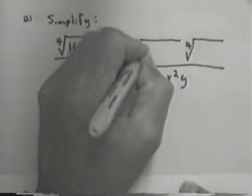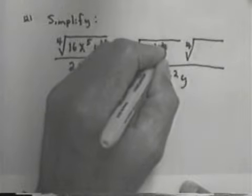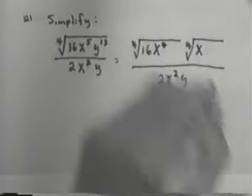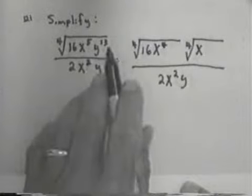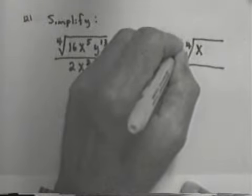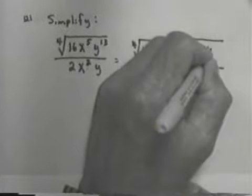16x to the 5th is not, but I can write it as x to the 4th times x. y to the 13th is not, but I can write it as y to the 12th times y.